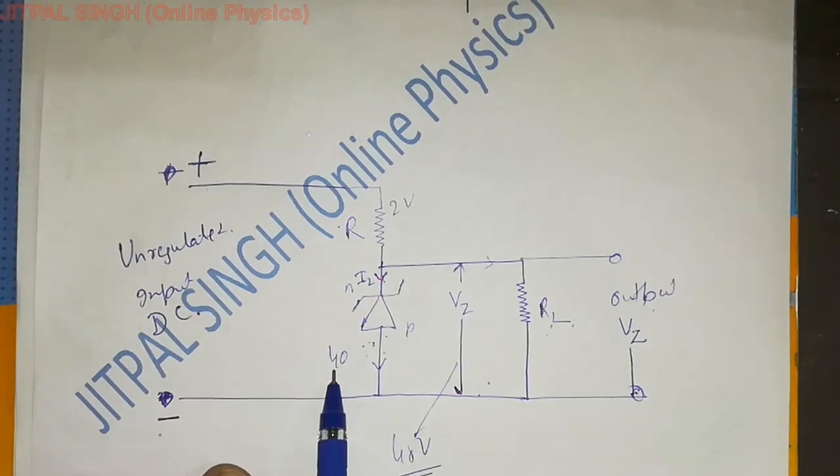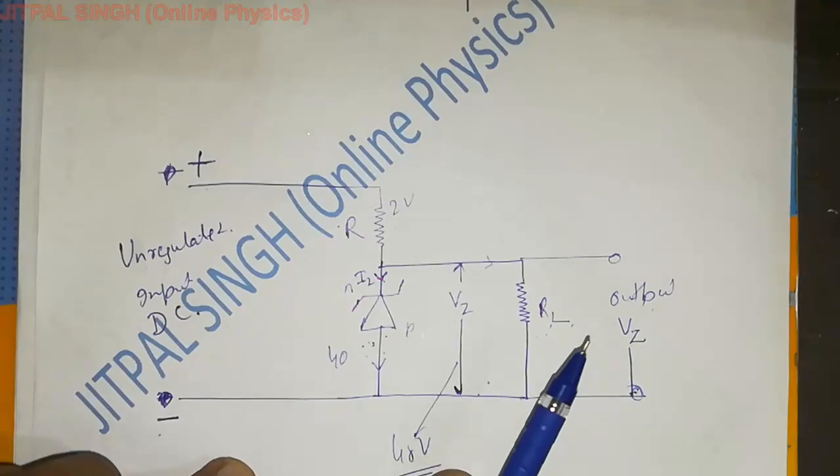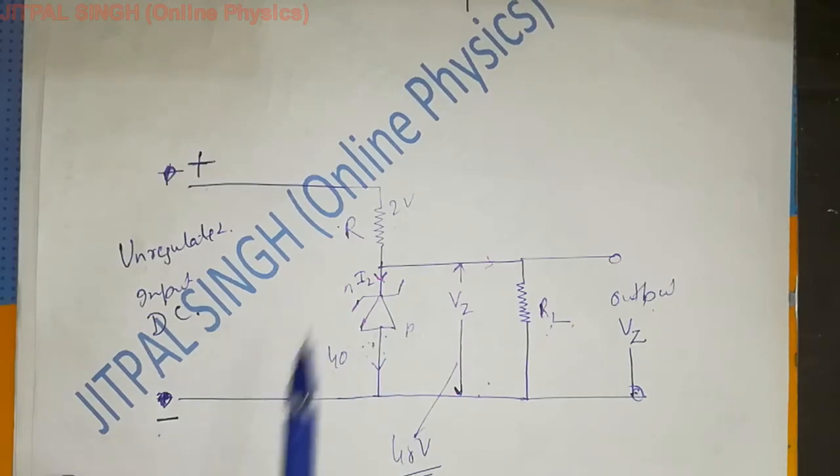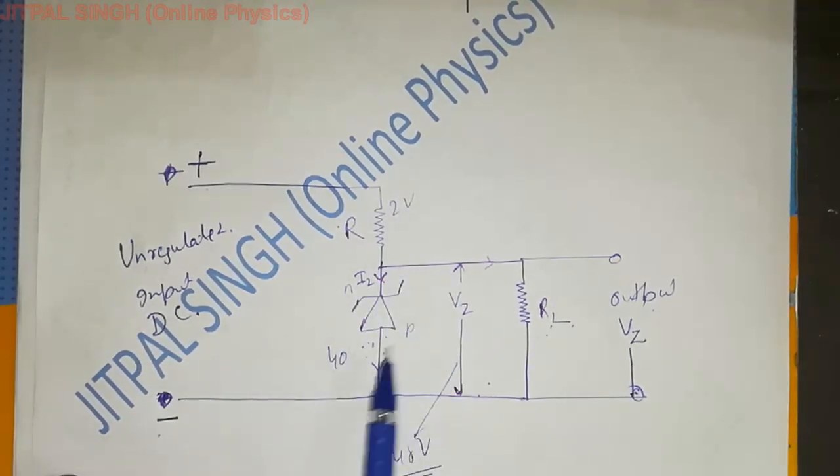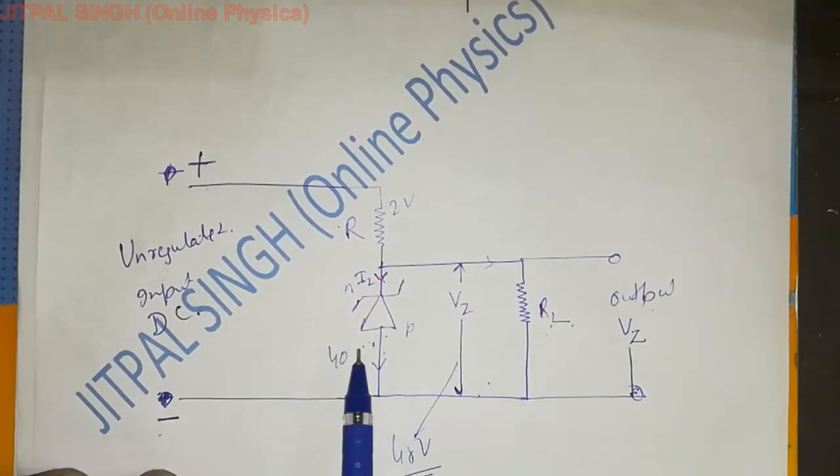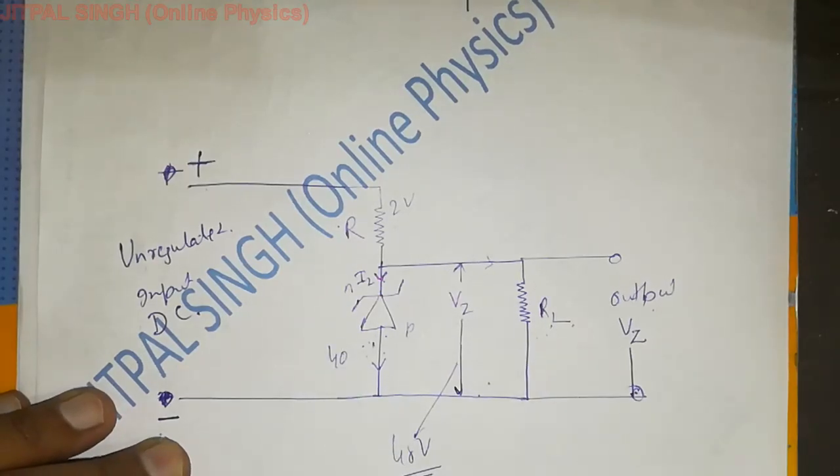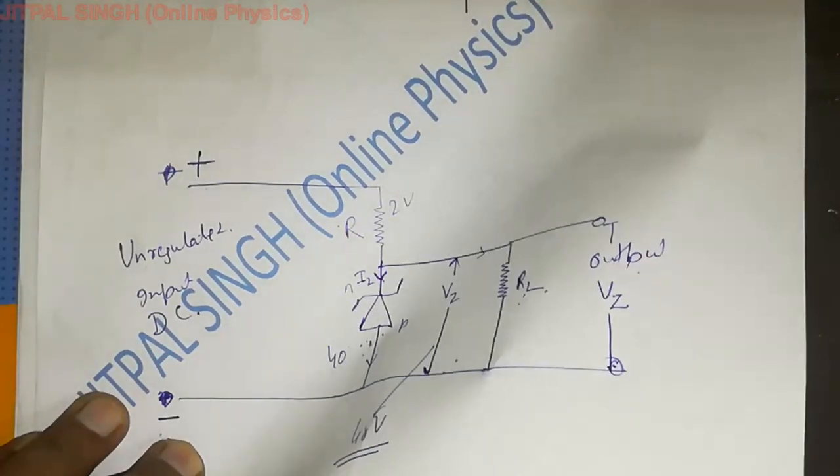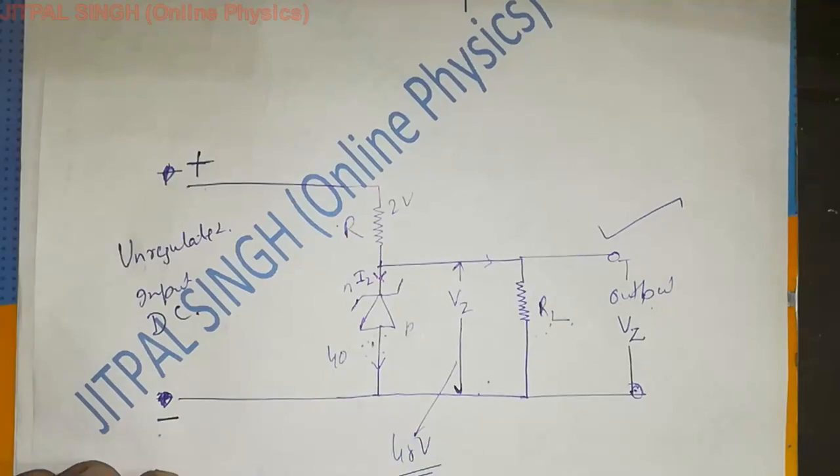Suppose you want to maintain 60 volts. Then you will install 60 volt Zener diode here. Before 60 volts, Zener diode won't do anything. It will remain inactive. Suppose input becomes 63. As it becomes 63, above that, this will become active. It will pass current through itself. 60 volts here, 3 volts here. RL is in parallel with this Zener diode. Note carefully, RL is in parallel with Zener diode, so voltage remains maintained. Output of RL will be equal to Vz, which is the required voltage. I hope the diagram is clear. Please remember this.